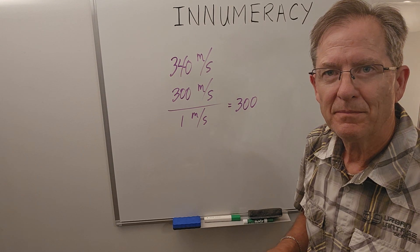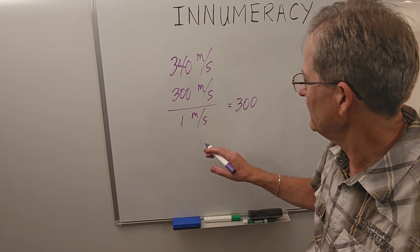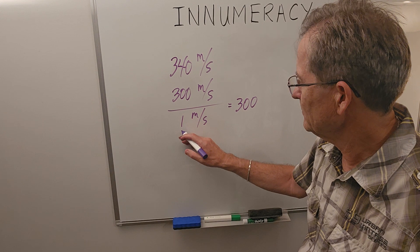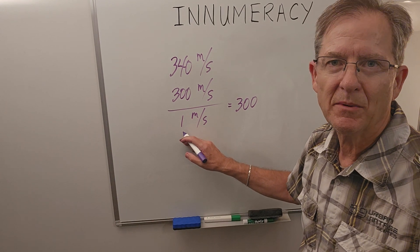Now, that can vary by a factor of two quite easily, if this is half a meter per second or two meters per second.